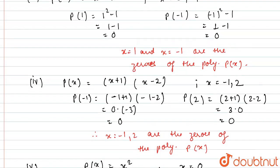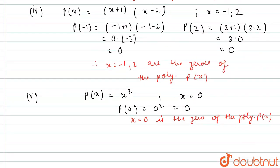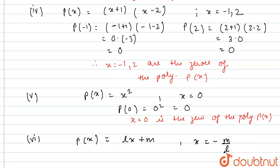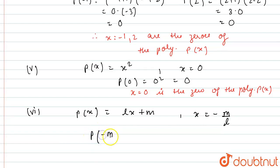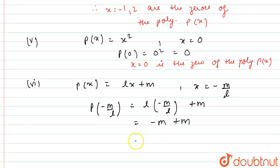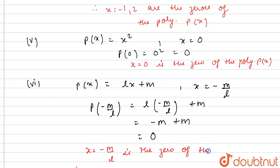In the sixth part, we are given the polynomial p(x) = lx + m and we need to find this at x = -m/l. I will find p(-m/l), which equals l multiplied by -m/l plus m. The l's cancel, leaving -m + m = 0. So x = -m/l is the zero of the polynomial p(x).